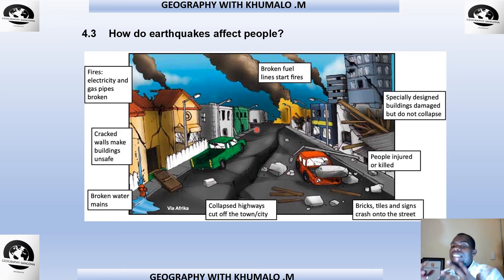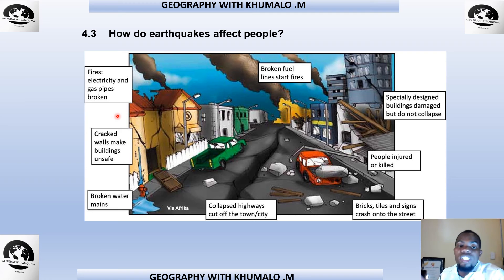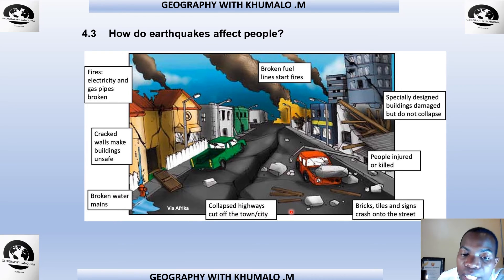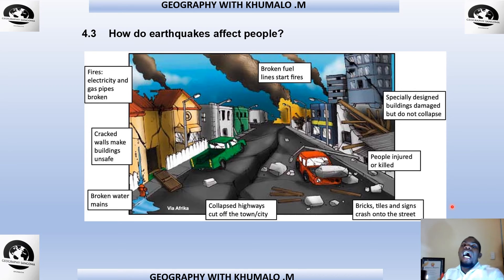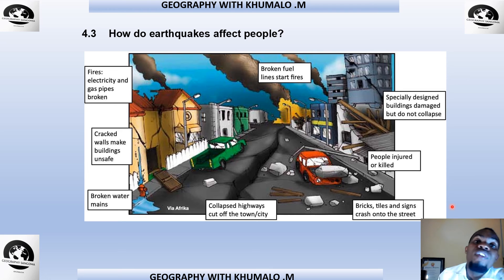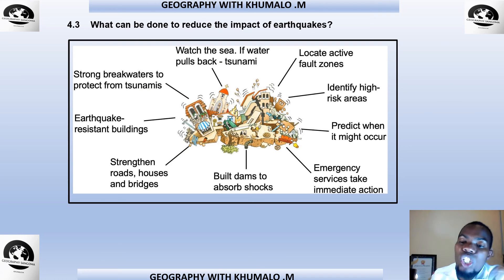How do earthquakes affect people? They cause fires when electric and gas pipes break; cracks in walls make buildings unsafe; broken water mains flood areas; collapsed highways cut off cities and towns; broken fuel lines start fires; specially designed buildings may be damaged but not collapse; people get injured or killed; and bricks and signs crash onto streets. When asked to describe the effects of an earthquake, refer to examples like these.